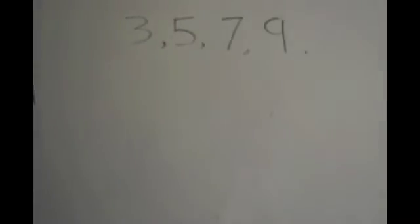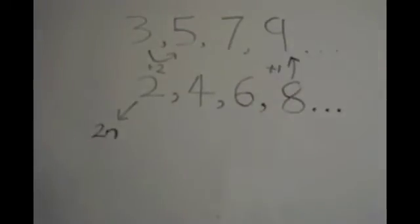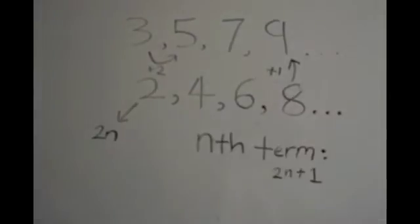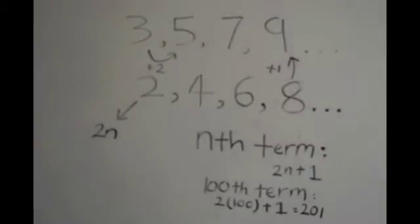To find the nth term for sequences that increase uniformly, you see the difference between the numbers of the sequence. For this case, it's plus 2. Write the sequence of 2 underneath, then you see how the two sequences are related. In this case, it's plus 1, so the nth term would be 2n plus 1. To find the 100th term, just insert 100 into n, and you will get the answer immediately.